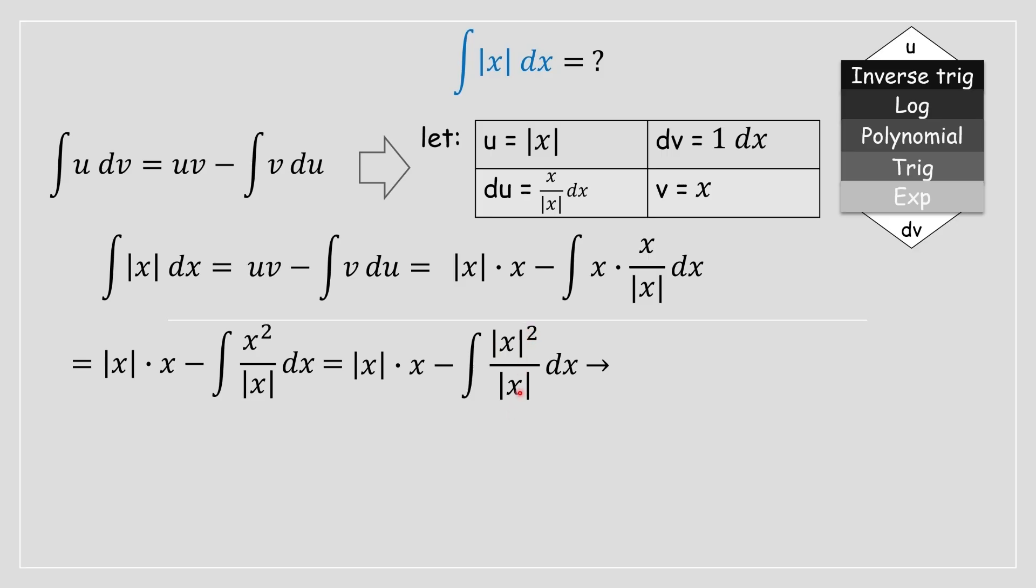Therefore we can rewrite it like this. Notice we got the same expression in the numerator and denominator—just in the numerator it's squared. So basically that's going to cancel out. What you are going to be left with is the integral of absolute value of x.